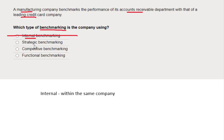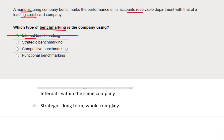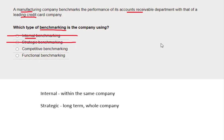What about strategic benchmarking? If something is strategic, it impacts the long-term planning horizon and the entire business. But here we're not looking at the entire business — we're just looking at one department, the accounts receivable department. So strategic can't be right either. Even without memorizing the definitions, we're now down to a 50/50 chance between competitive and functional.